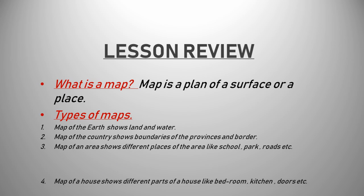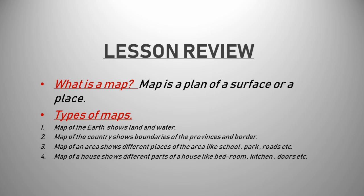Lesson Review. What is a map? Map is a plan of a surface or a place. Types of maps: Number 1, map of the earth shows land and water. Number 2, map of the country shows boundaries of the provinces and borders. Number 3, map of an area shows different places of the area like school, park, roads, etc. Number 4, map of a house shows different parts of a house like bedroom, kitchen, doors, etc. After watching this video and the previous video on direction, you can draw a simple map of your house.